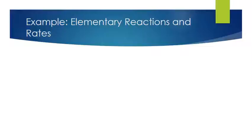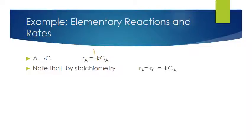Let's do more examples of elementary reactions and their rate equations. If we are given an elementary reaction A goes to C, then the rate of formation of A is again negative — because A is a reactant and is being consumed — equal to the rate constant times C_A. By stoichiometry, for every mole of A we use up we produce one mole of C, so Rate_A equals minus Rate_C, which equals minus K·C_A.